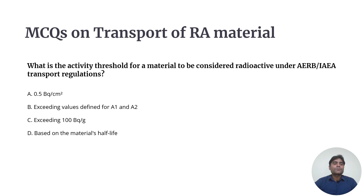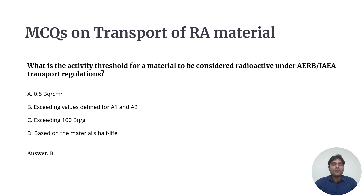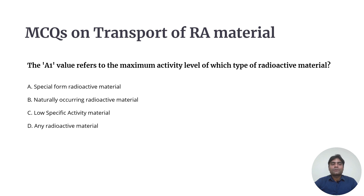Question 2: What is the activity threshold for a material to be considered radioactive under IAEA transport regulations? Option A is 0.5 becquerels per centimeter square. Option B is exceeding values defined for A1 and A2. Option C is exceeding 100 becquerels per gram. Option D is based on the material's half-life. The correct answer is Option B — exceeding the values defined for A1 and A2.